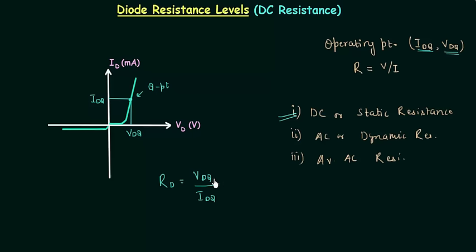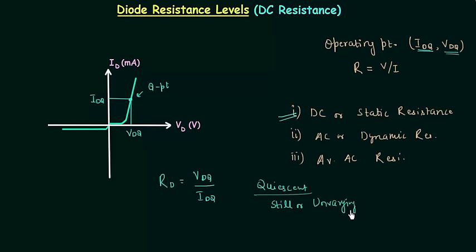We write Q in the representation of diode voltage and current because Q is derived from quiescent, and quiescent means still or unvarying. The quiescent point is nothing but the operating point of the diode — operating point is also called the quiescent point — and because of this we write Q in the representation.